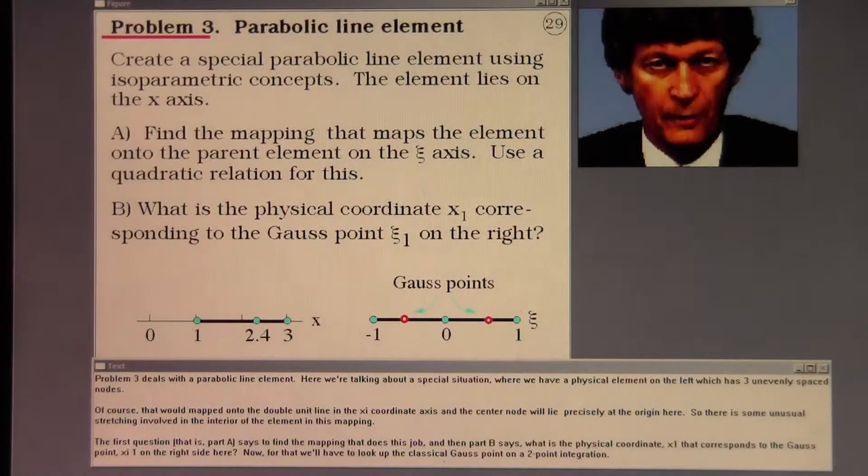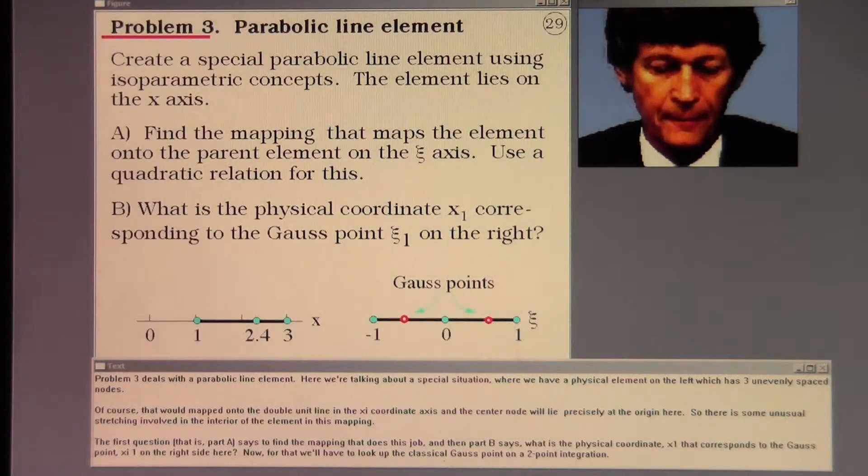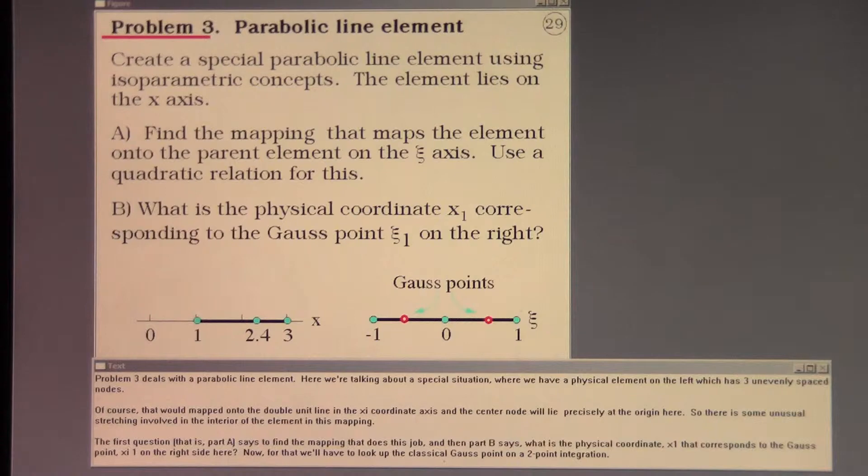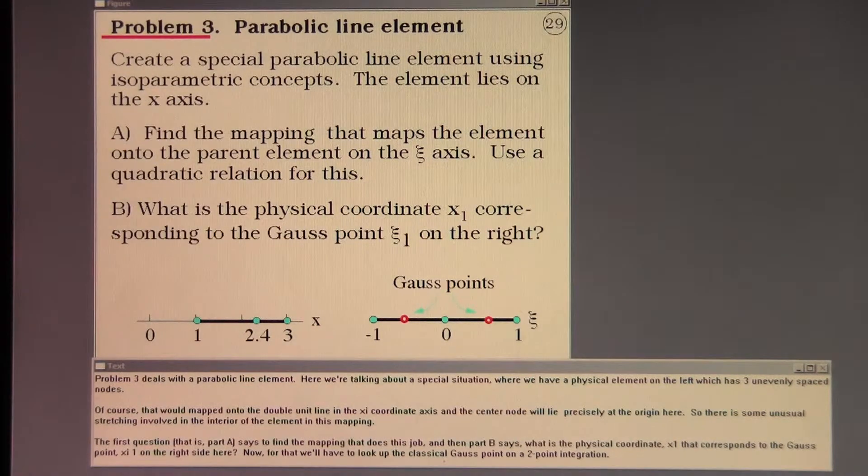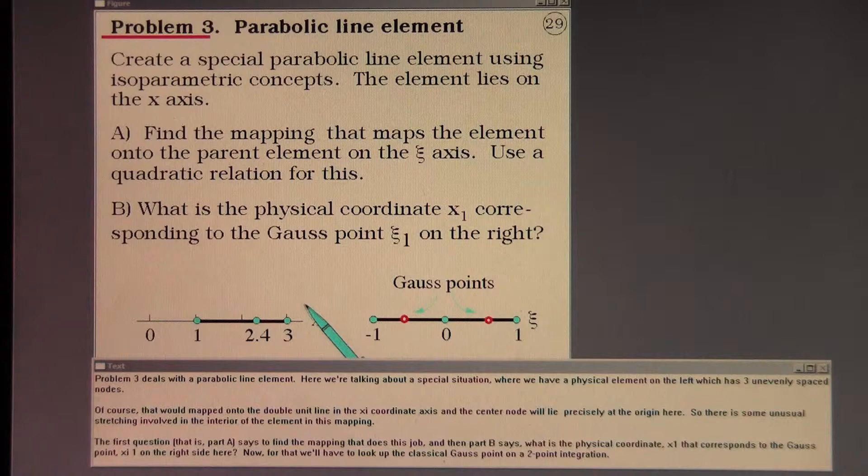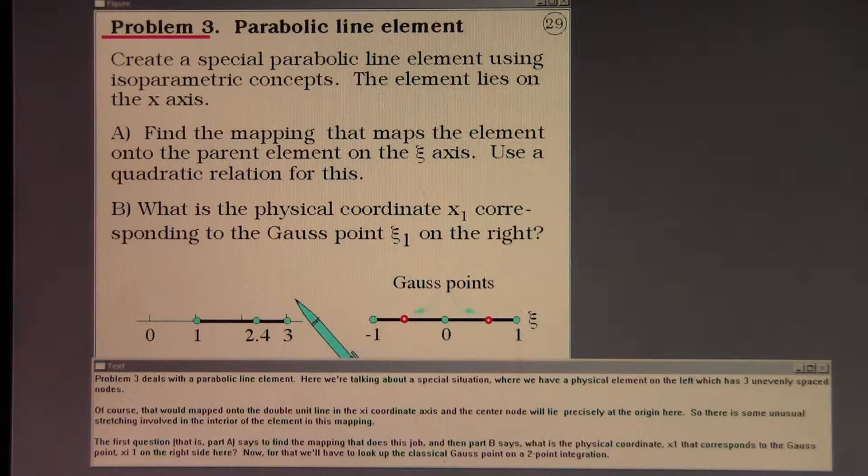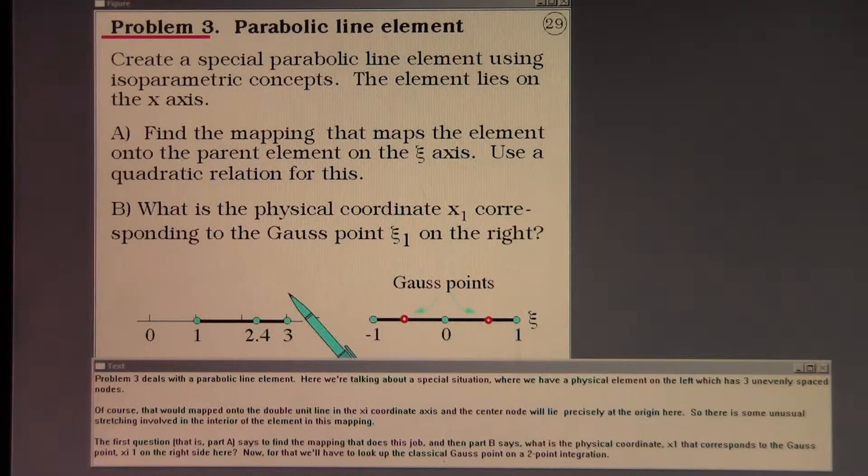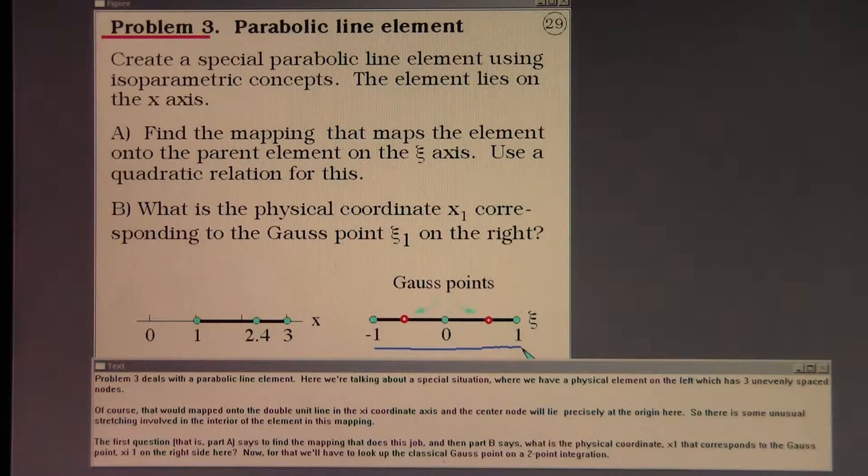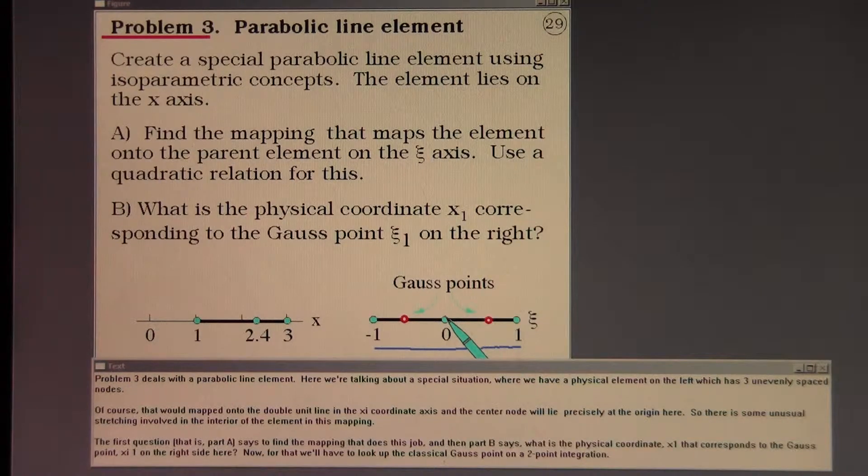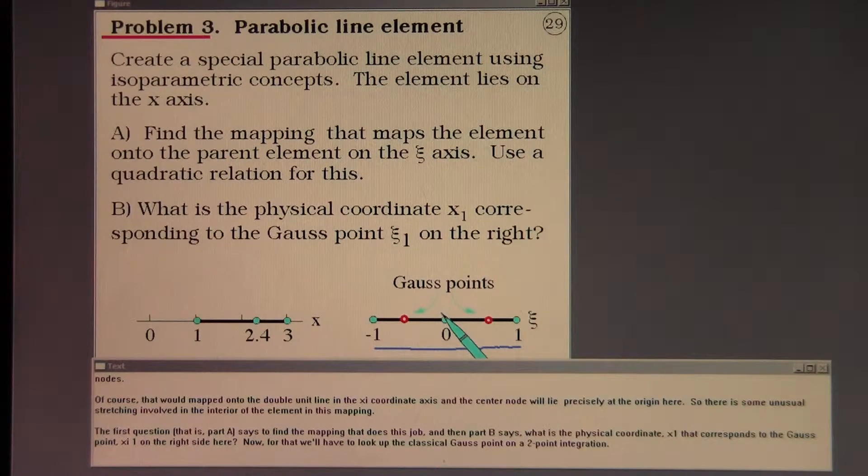Problem three deals with a parabolic line element. Here we're talking about a special situation where we have a physical element on the left which has three unevenly spaced nodes. Of course that will be mapped onto the double unit line in the ξ coordinate axis. And the center node will lie precisely at the origin here. So there is some unusual stretching involved in the interior of the element in this mapping.